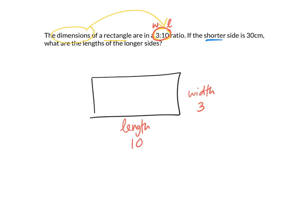Now it says here if the shorter side, which is the width, is 30 centimeters, so if this side here is 30 centimeters, we have to figure out what is the length of the longer side. We want to know what the length is.